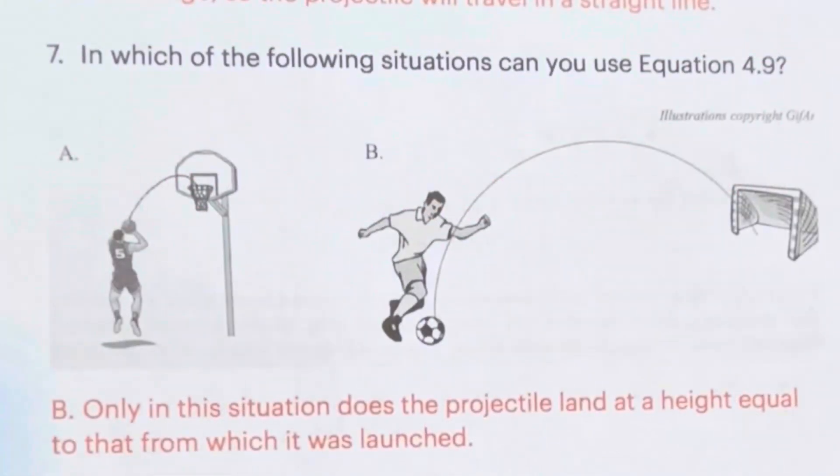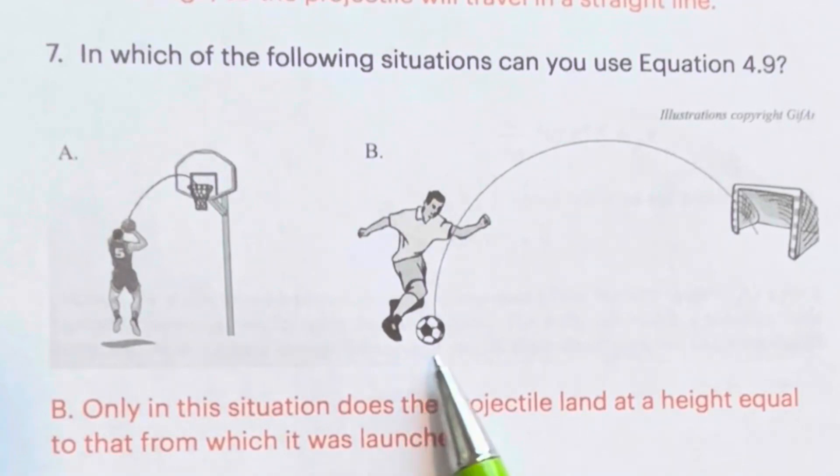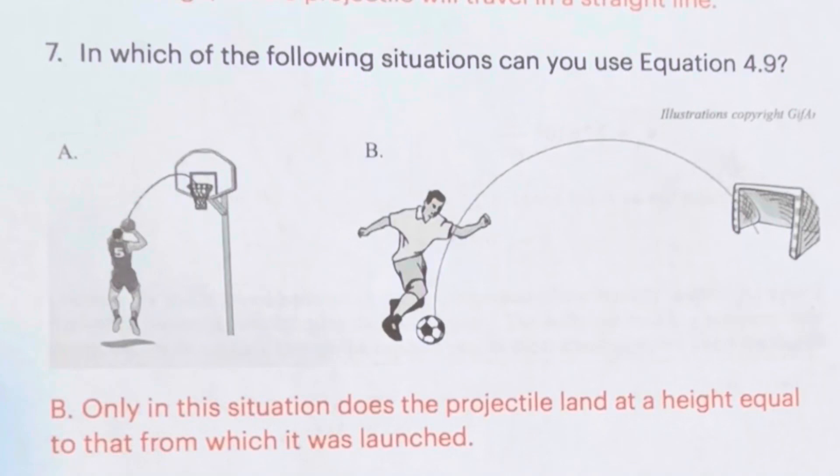In which of the following situations can you use equation 4.9? It can only be used in equation B. Only in this situation does the projectile land at a height equal to that from which it was launched.